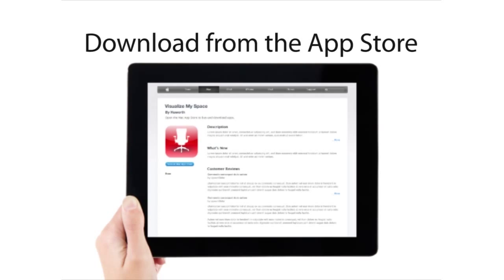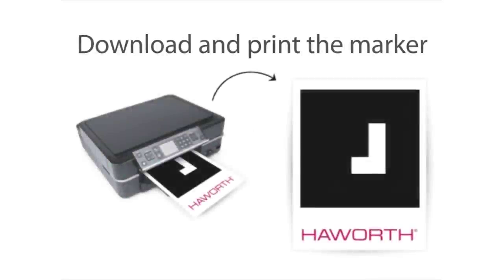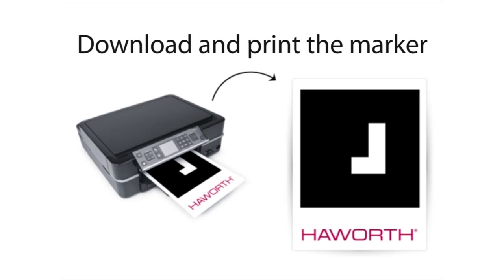To download the app, follow the link from the Haworth store website or search on Apple's App Store. Next, download the marker onto your computer and print it on standard paper.